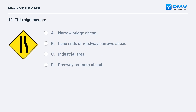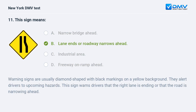This sign means: A. Narrow bridge ahead. B. Lane ends or roadway narrows ahead. C. Industrial area. D. Freeway on-ramp ahead. The answer is B: Lane ends or roadway narrows ahead. Warning signs are usually diamond-shaped with black markings on a yellow background. They alert drivers to upcoming hazards. This sign warns drivers that the right lane is ending or that the road is narrowing ahead.